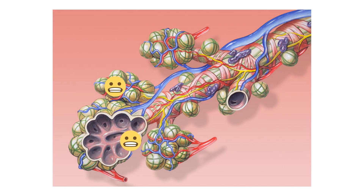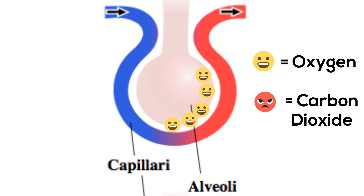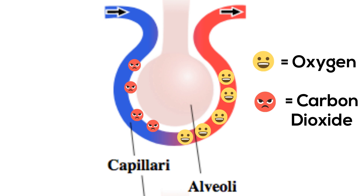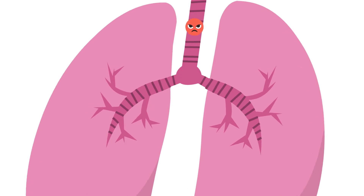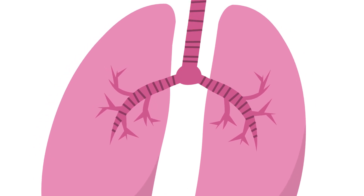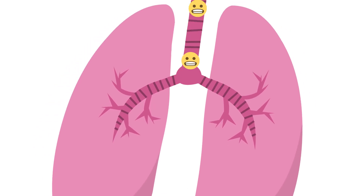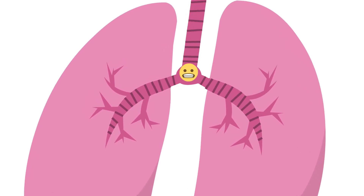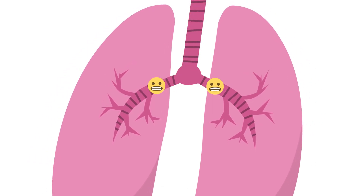At the alveoli, oxygen diffuses into the capillaries and carbon dioxide diffuses into the alveoli and then it is exhaled. This process is then repeated over and over again.